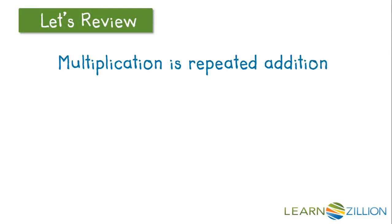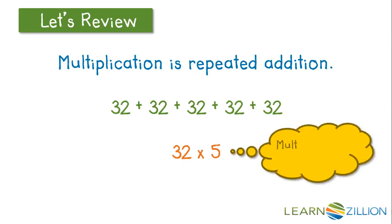Multiplication is the same thing as repeated addition. We could add 32 five times or we could simply say 32 times 5 and we would find the answer. Multiplication is much faster.